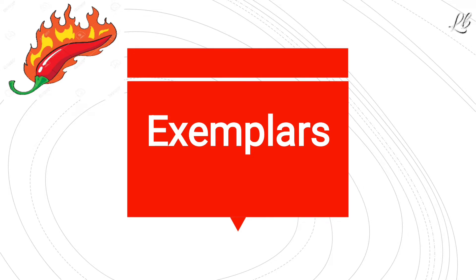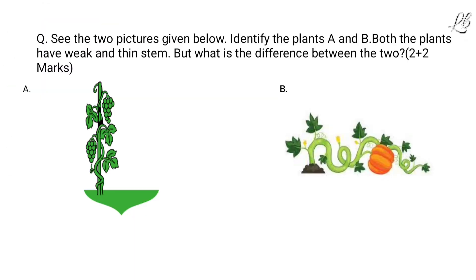Now, some examples of HOTS-based questions from general science. Question number 1: See the two pictures given below. Identify the plants A and B. Both the plants have a weak and thin stem. But what is the difference between the two?